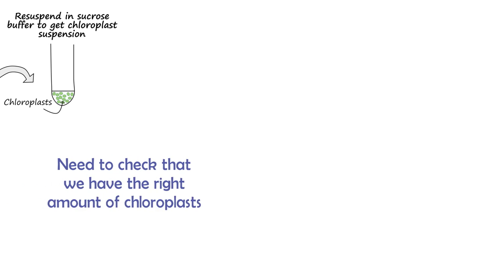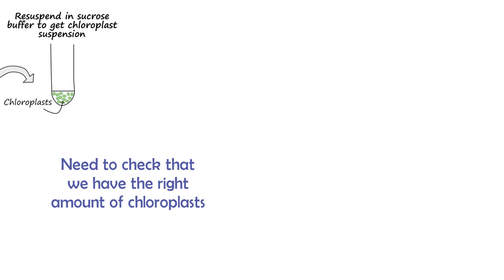Before we do the actual biochemical experiments, we need to check how dense the chloroplast preparation is. If there are too many chloroplasts, the reaction will happen too quickly for us to observe, but if there aren't enough, the reaction will be too slow to be visible. We could count the density of chloroplasts under the microscope, but it's much easier to use the chlorophyll concentration as an indicator of how many chloroplasts there are likely to be.